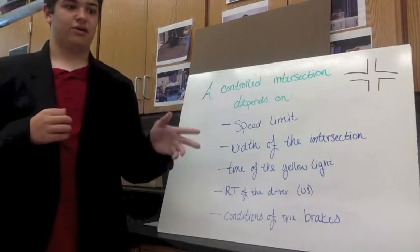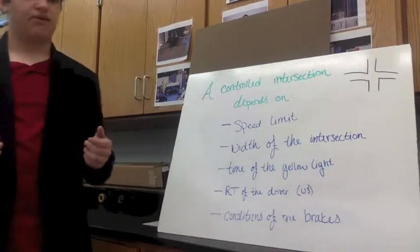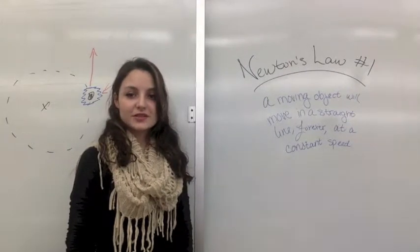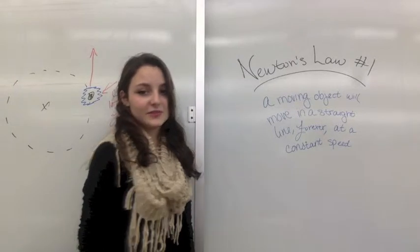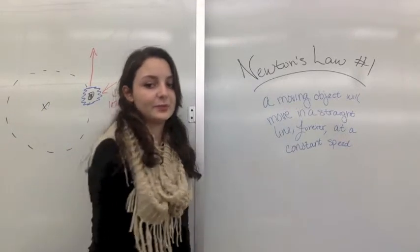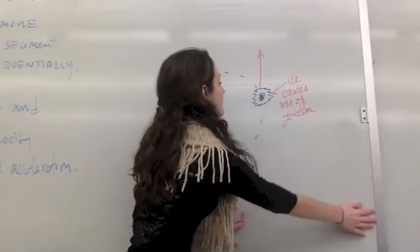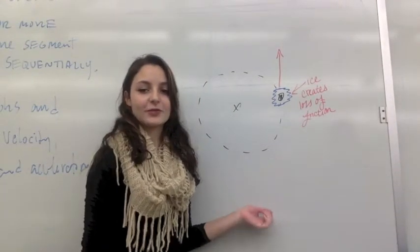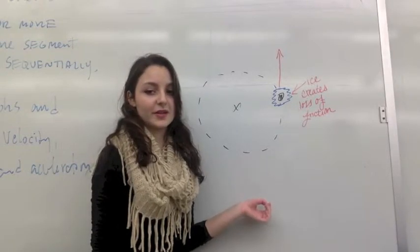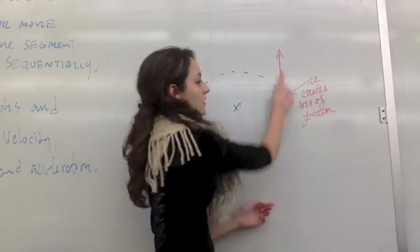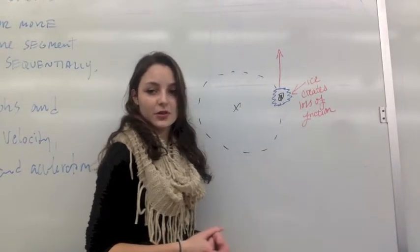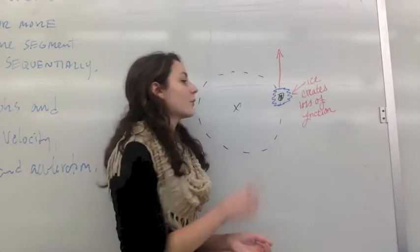Using these factors, we can determine the go zone and the stop zone, which allow us to decide whether or not we can proceed or stop, without breaking the law, of course. Recently, we learned about centripetal force and acceleration, which also includes Newton's laws of motion. His first law states that a moving object will move in a straight line forever at a constant speed. If we're driving on an icy road and we encounter a patch of ice while turning, we know based on what we learned about centripetal acceleration that the car will go straight tangent to the circle when it loses friction. Friction provides the centripetal force, which allows the car to follow the circle or turn while we drive.